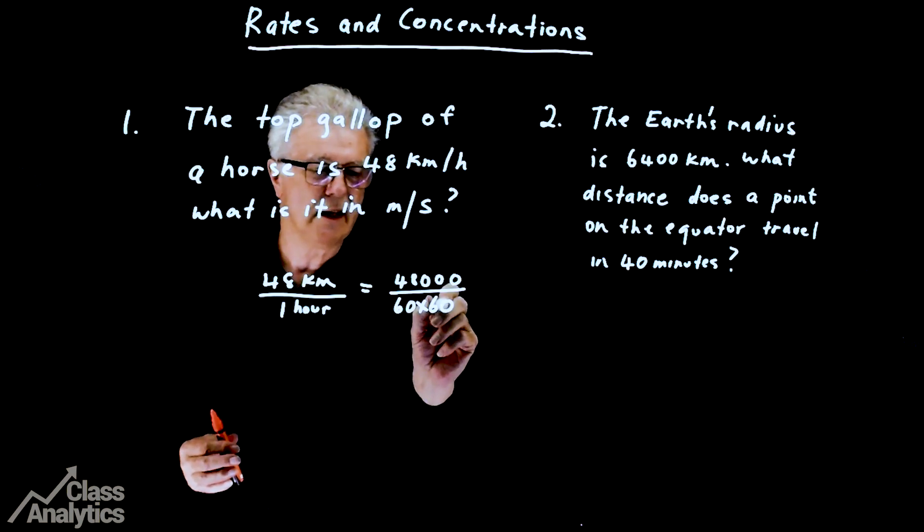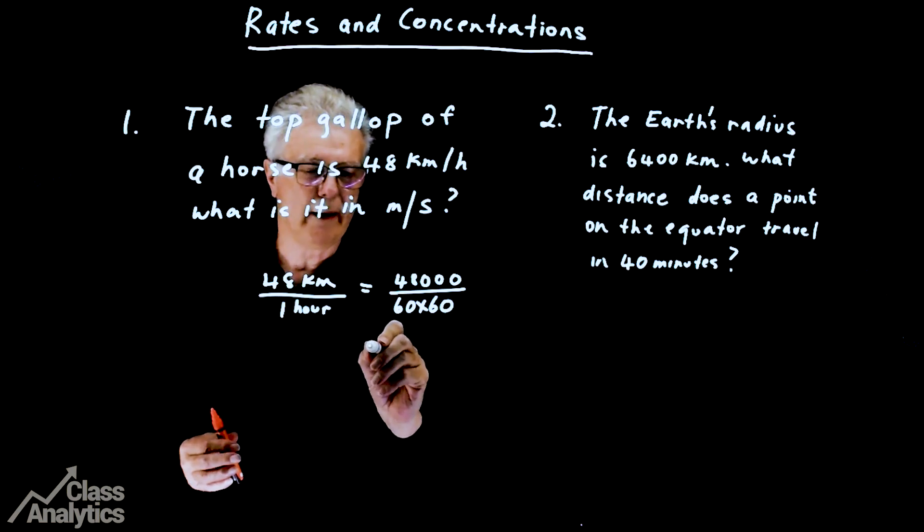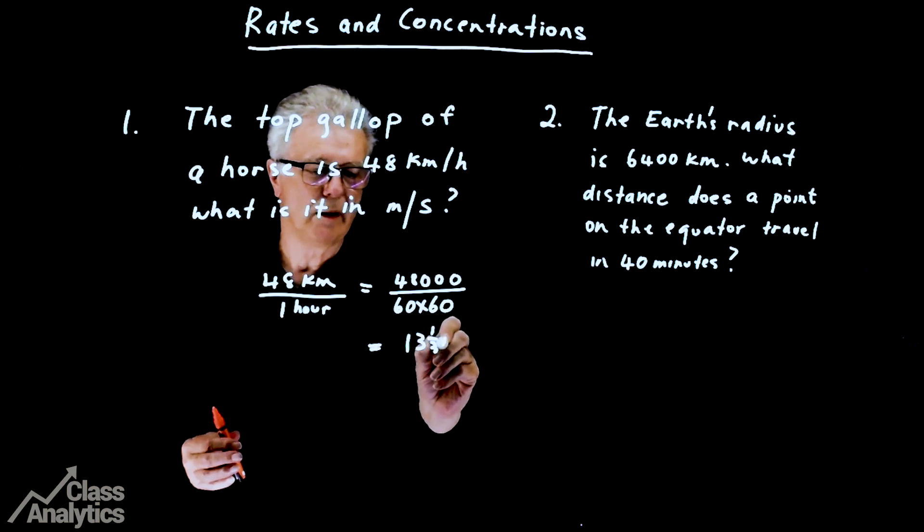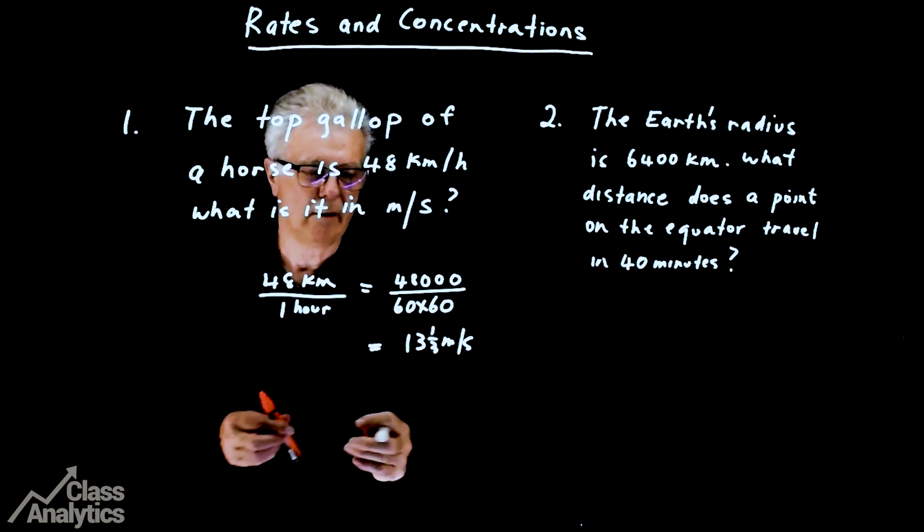60 minutes in an hour, 60 seconds in a minute. And that comes out to 13 and a third metres per second on your calculator.